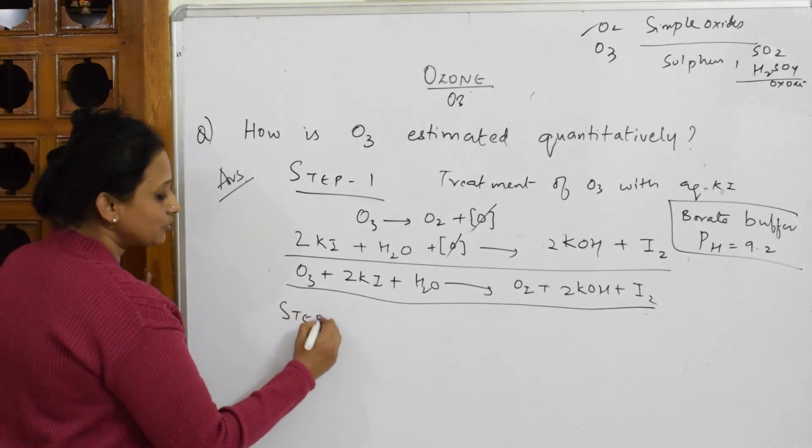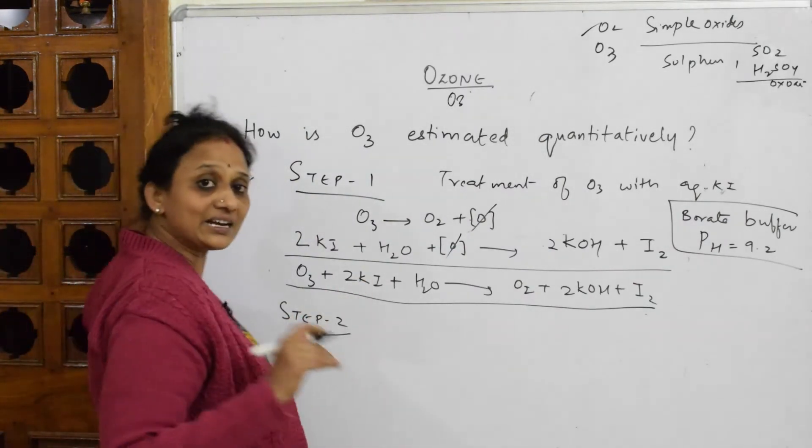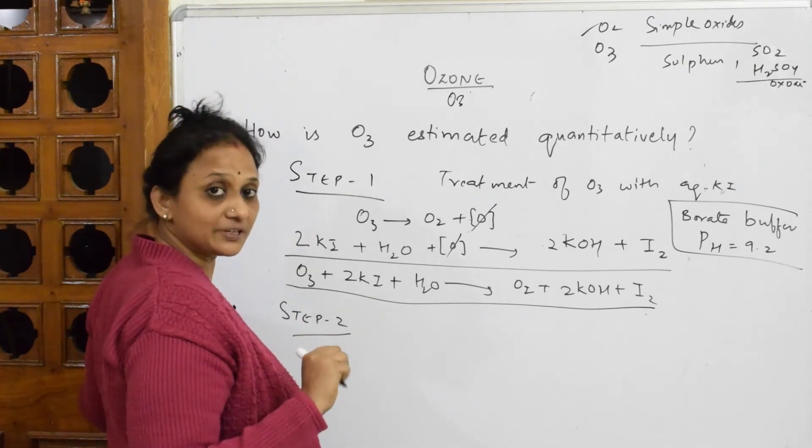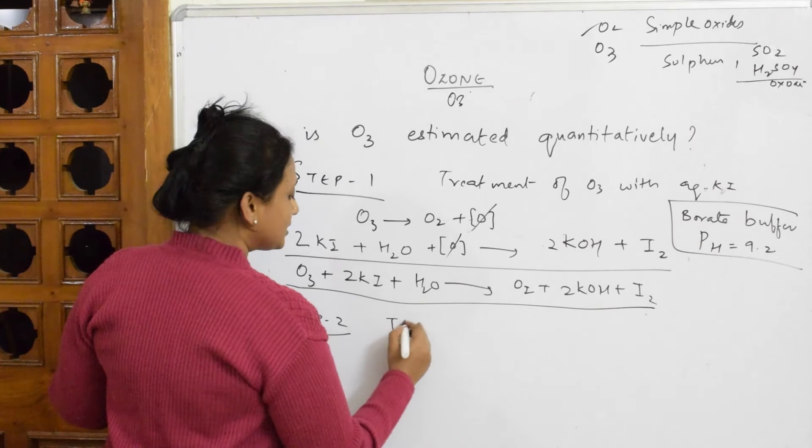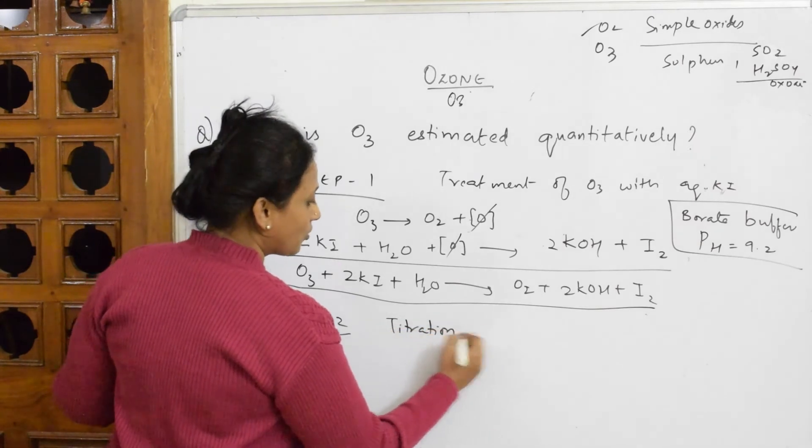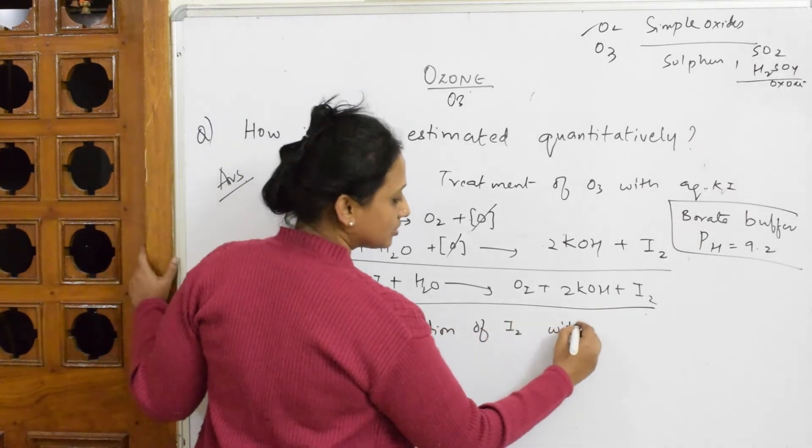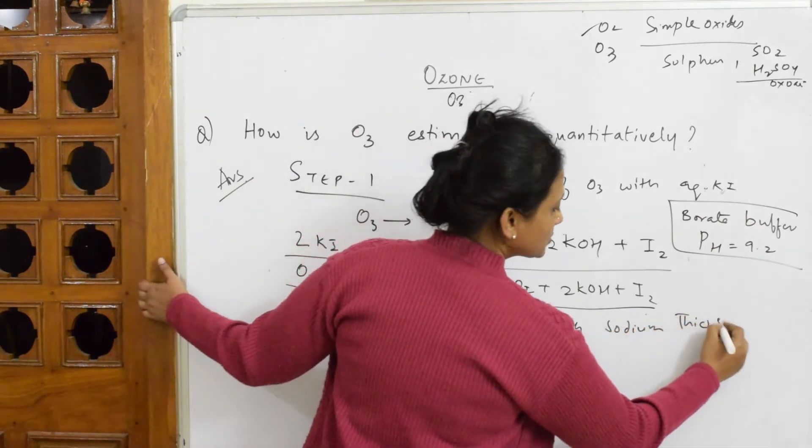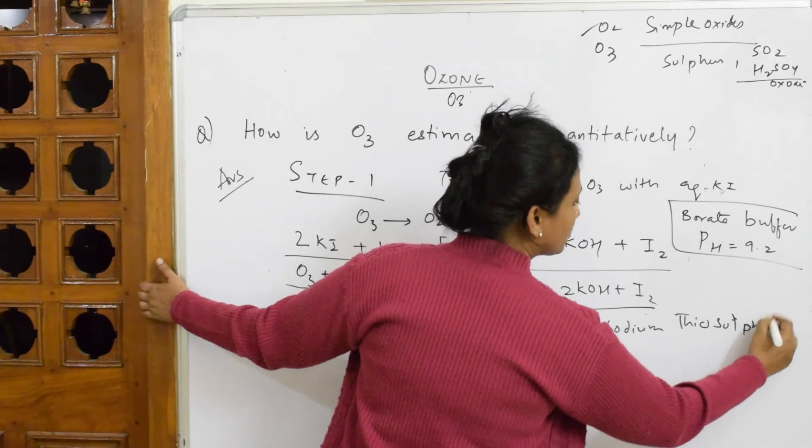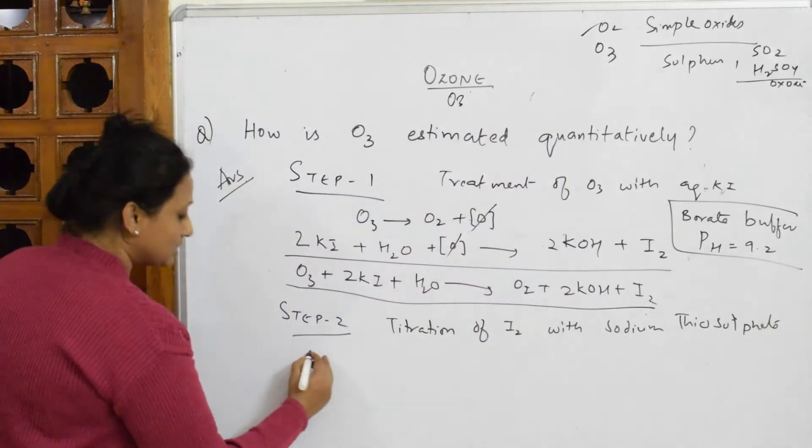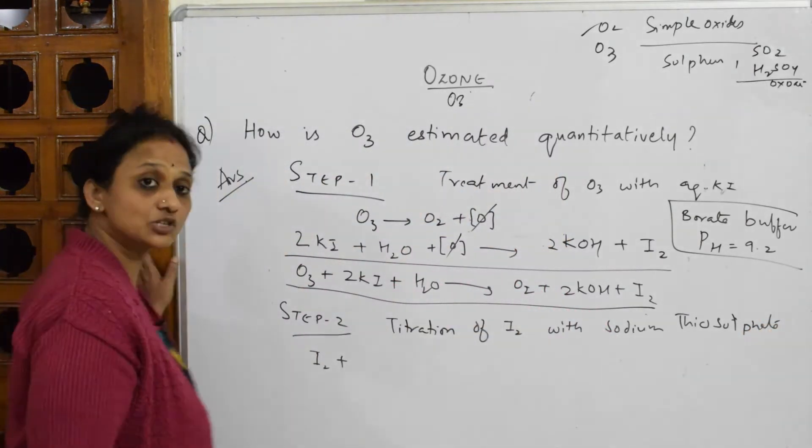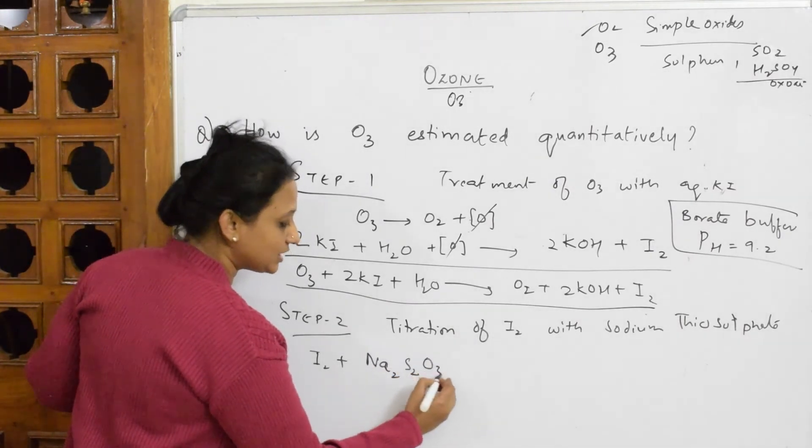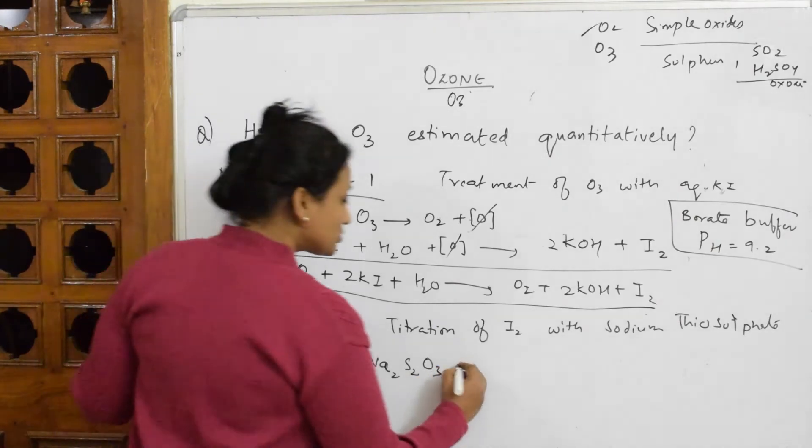After once I get this iodine in step two, what am I going to do? I'm going to treat this iodine or titrate it with sodium thiosulfate. So what do I do? Titration of I₂ with sodium thiosulfate. What is the formula? I'm going to take that I₂ and I'm going to add sodium thiosulfate, formula is Na₂S₂O₃.